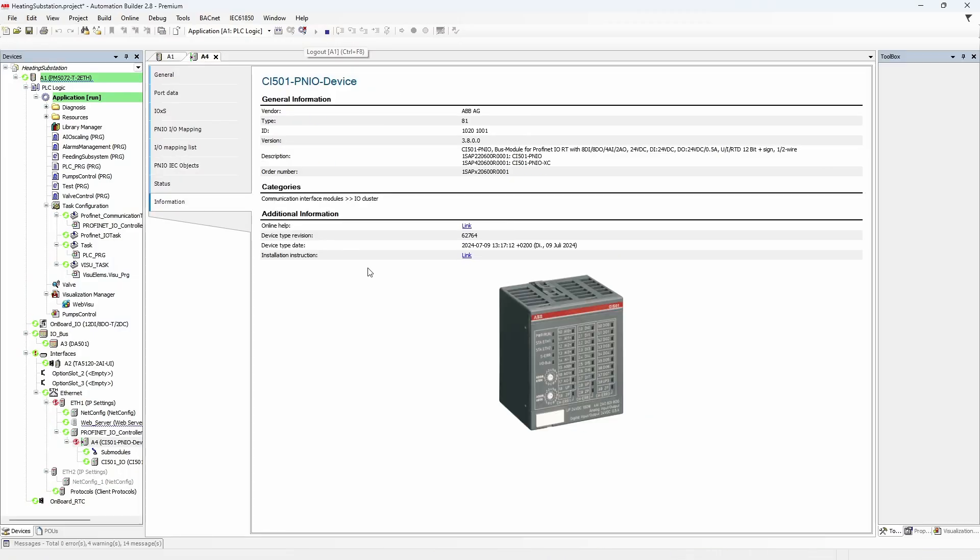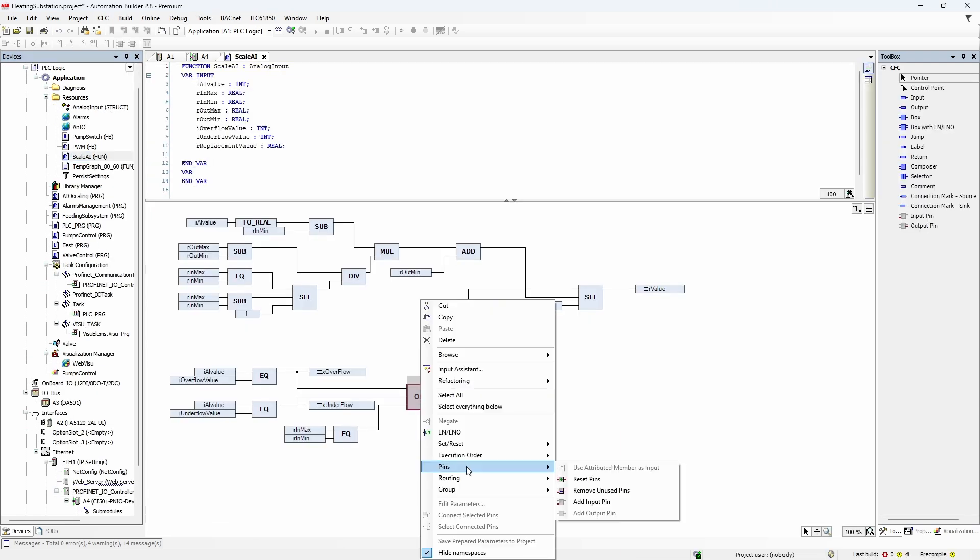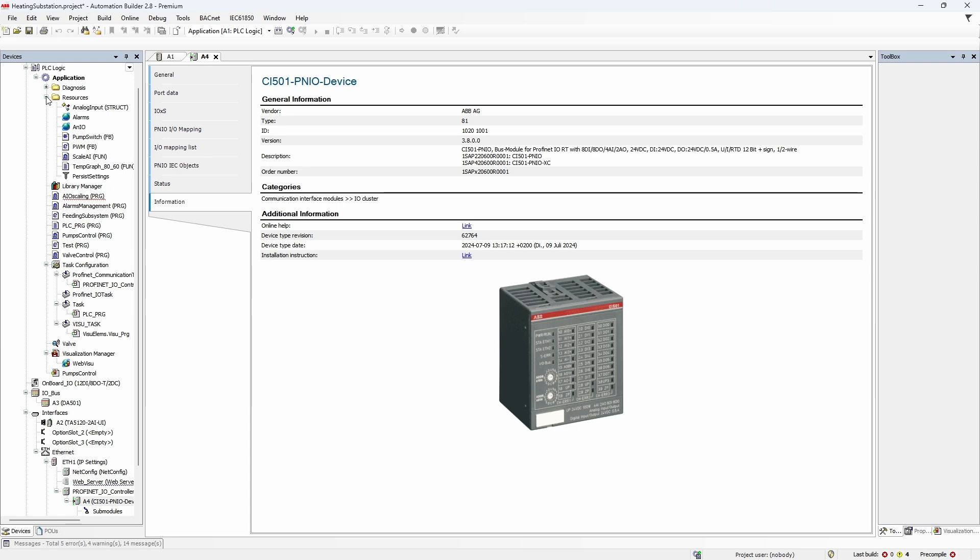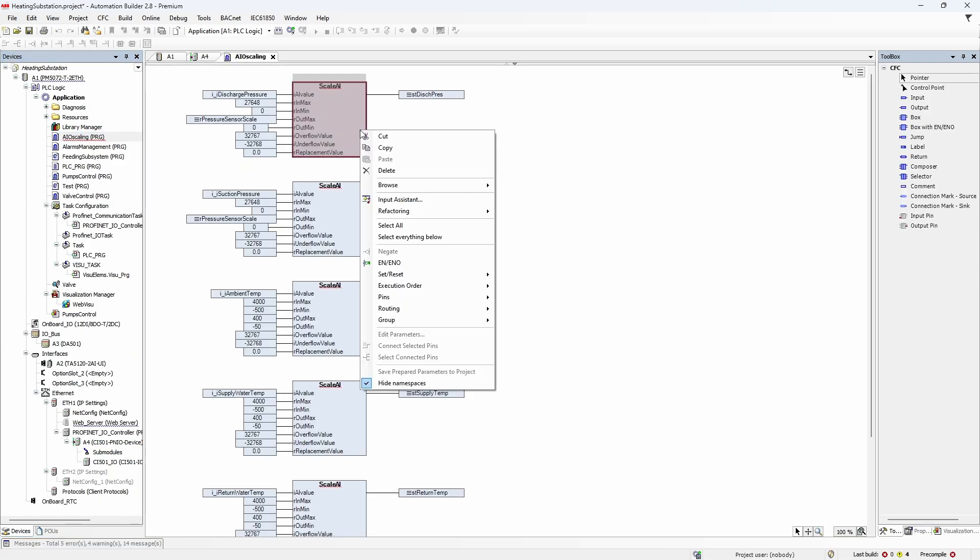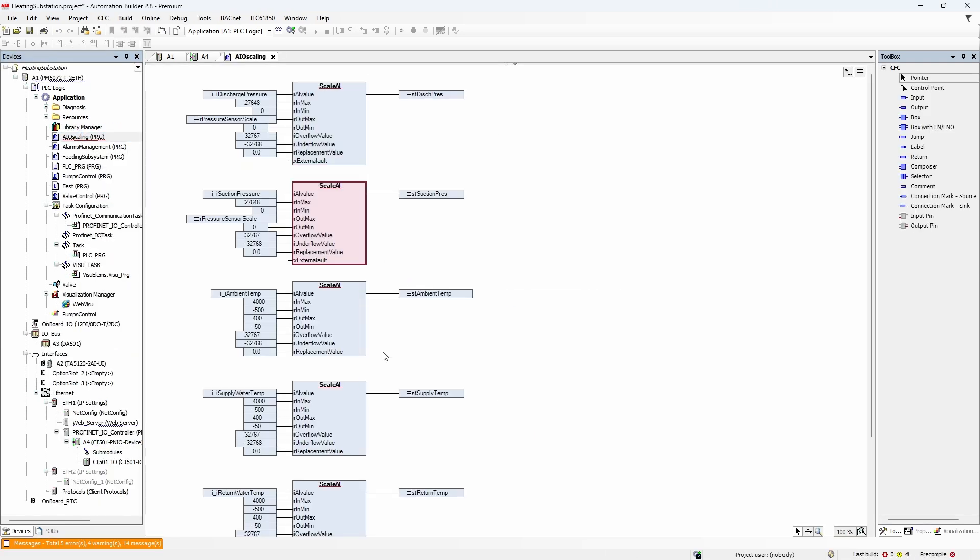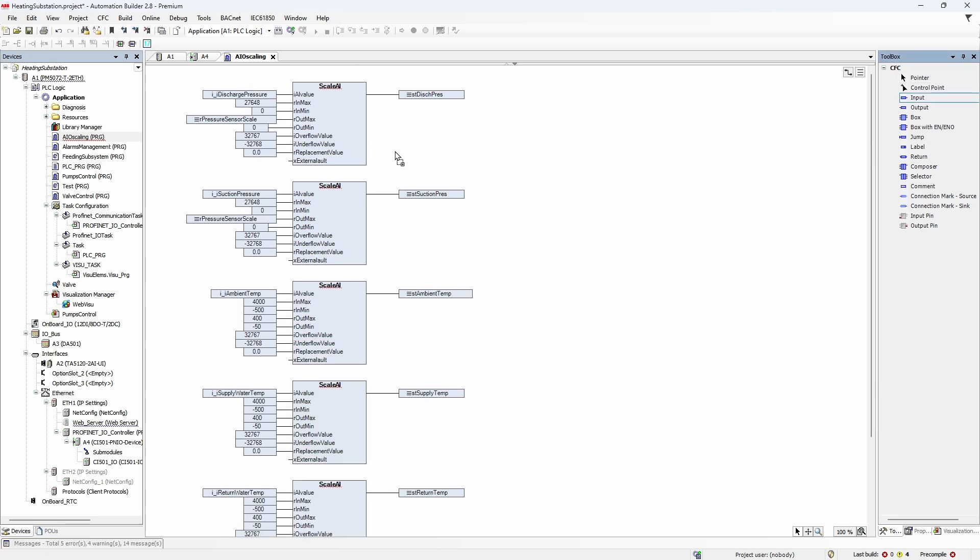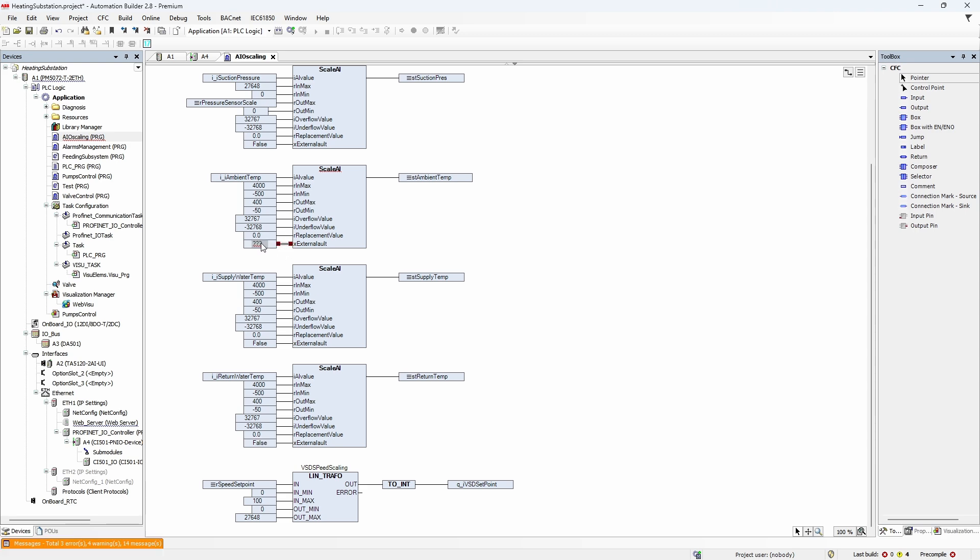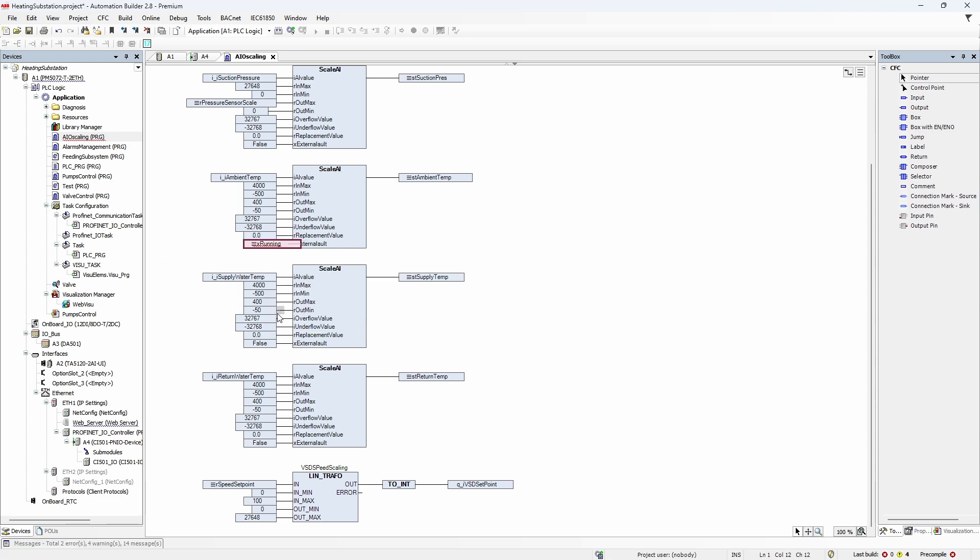Go offline, find ScaleAI function, add the additional input external fault, and then plug it in where the fault signal is formed. After that, go to AIO Scaling program and make sure function calls contain newly added input. For all local I/O inputs, connect false constant to default input. For ambient temperature, put inverted x running flag.